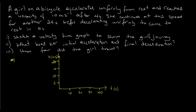Here I have my axis set up for the velocity-time graph. The question says the girl accelerates uniformly to 10 meters per second after four seconds. Estimating the five-second point, we can see that the four-second point would be about right here. Starting from rest, she accelerates up to this point, and we connect the points.